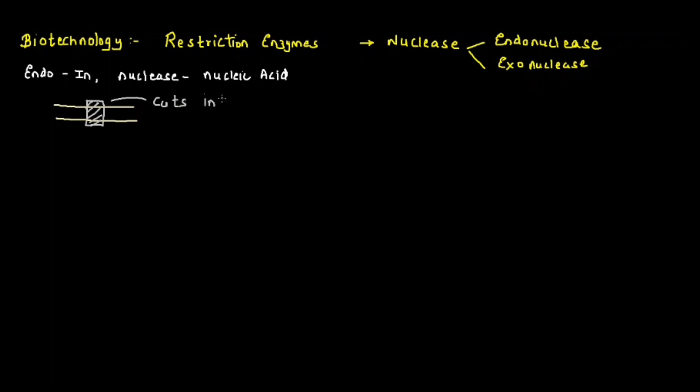We need to understand exonuclease. Exo means basically out and ends. In exonuclease, the enzyme cuts the nucleic acid from the ends, not in the center.